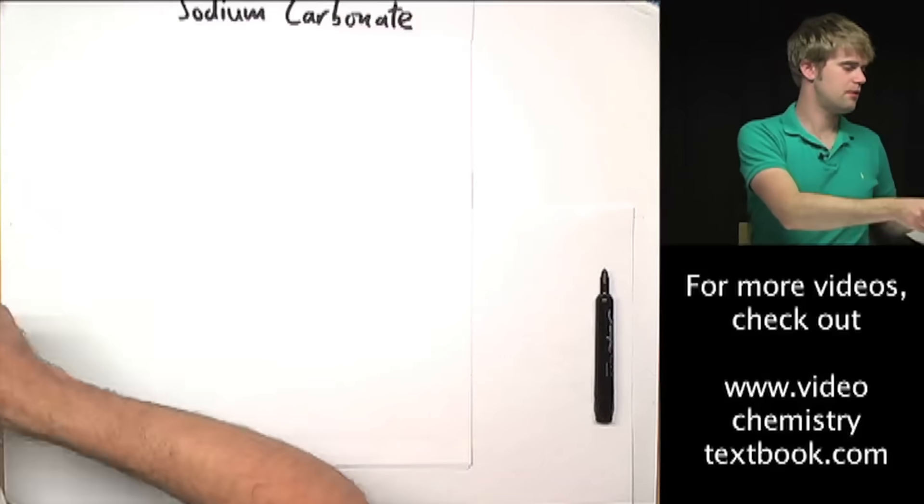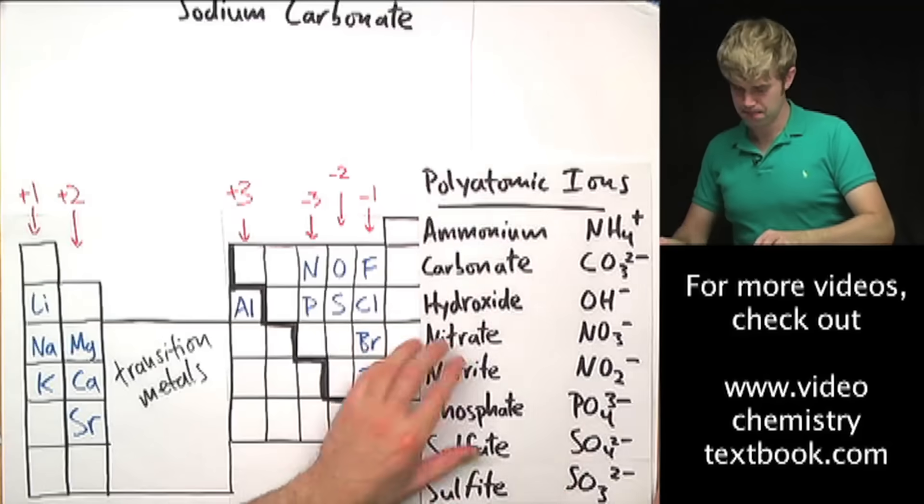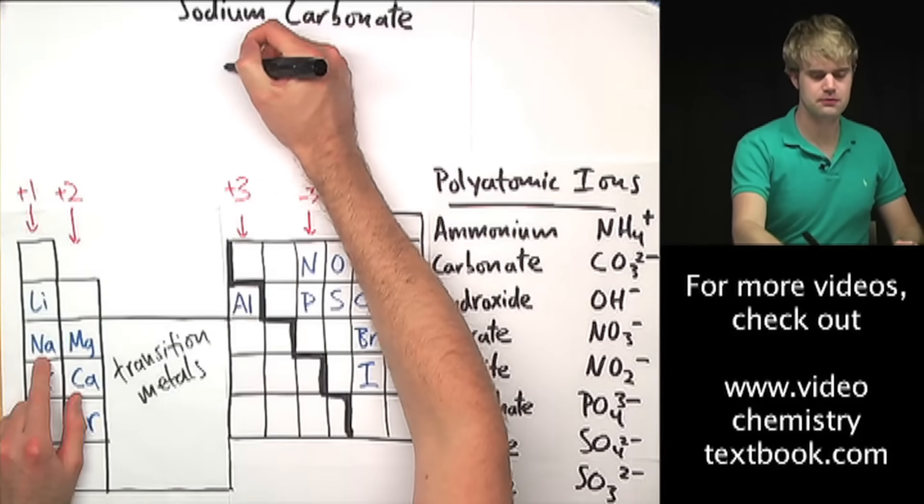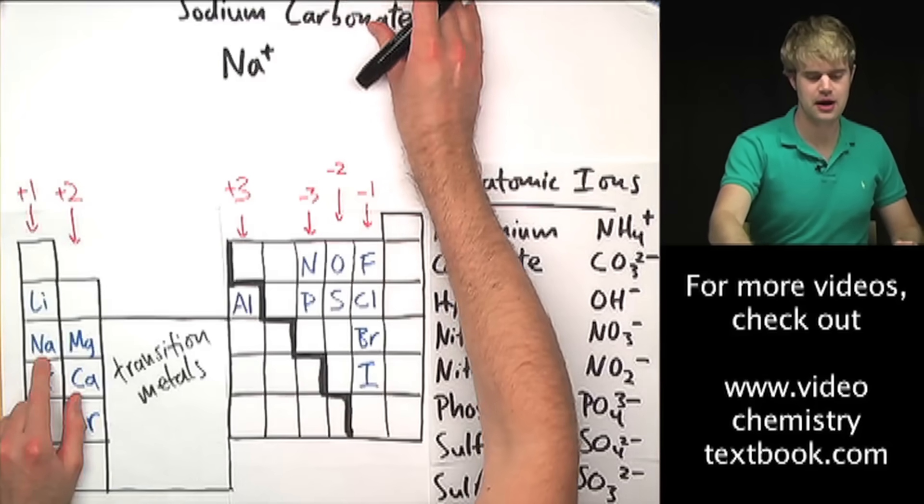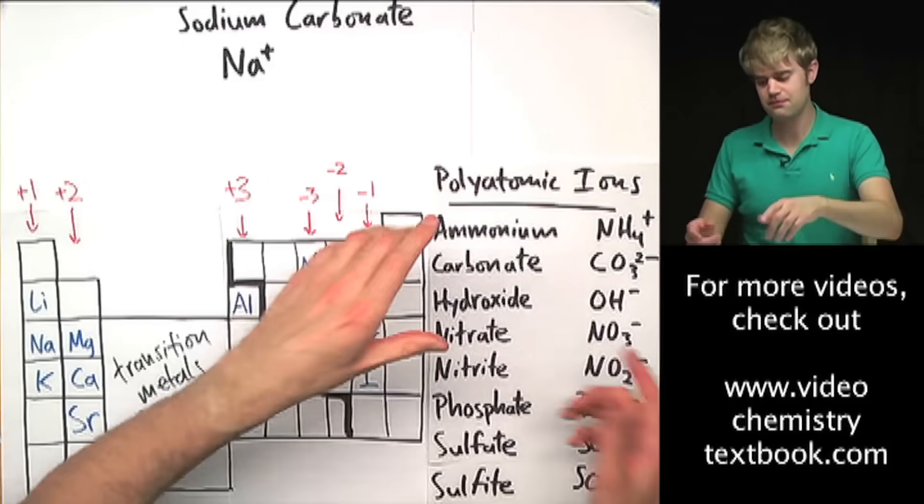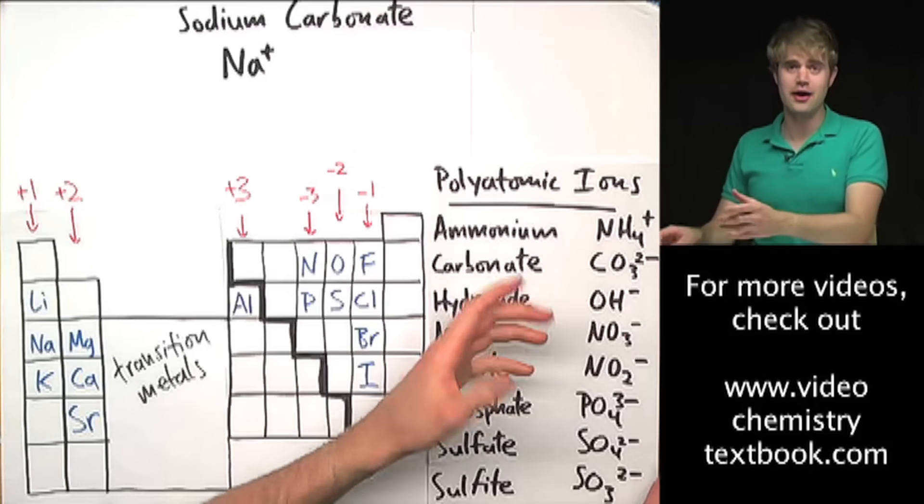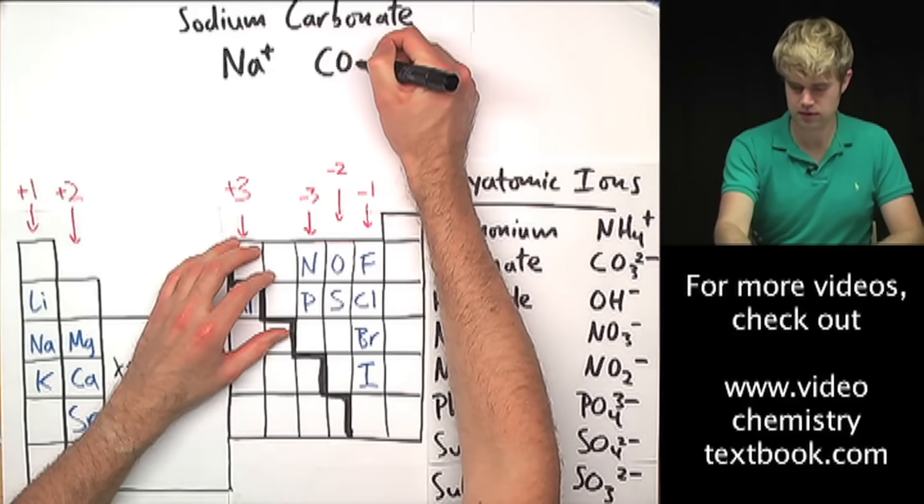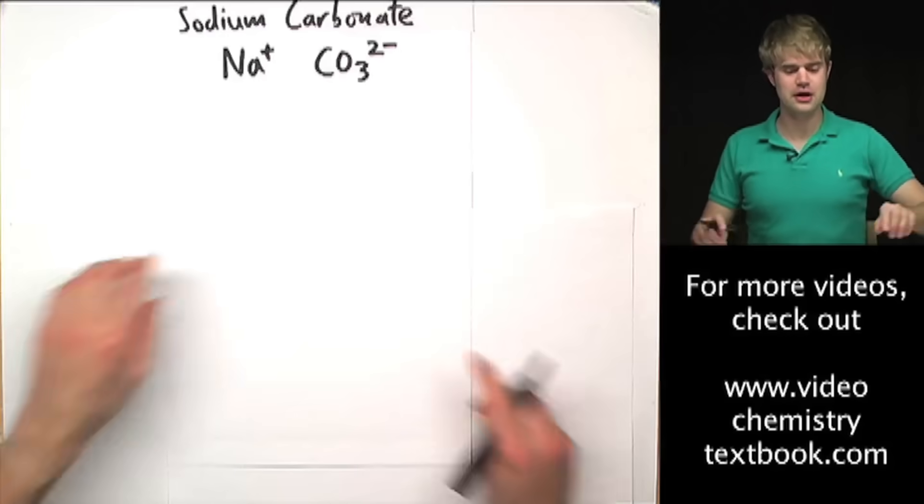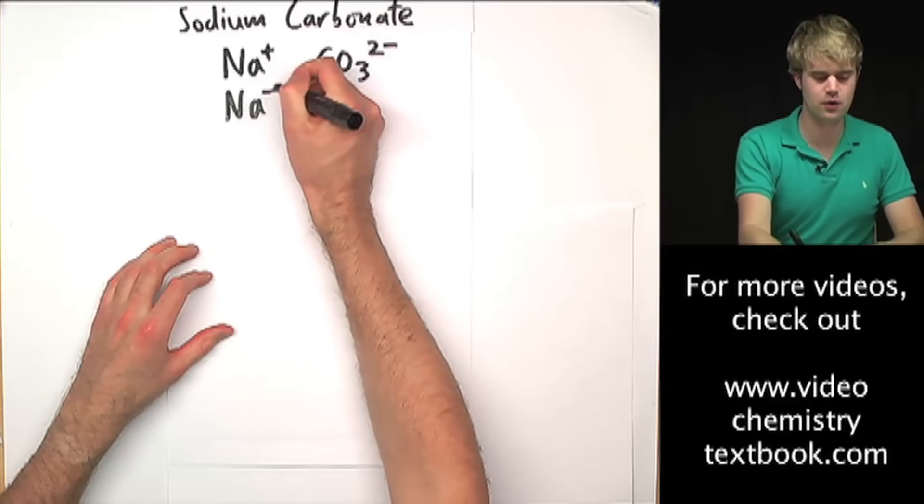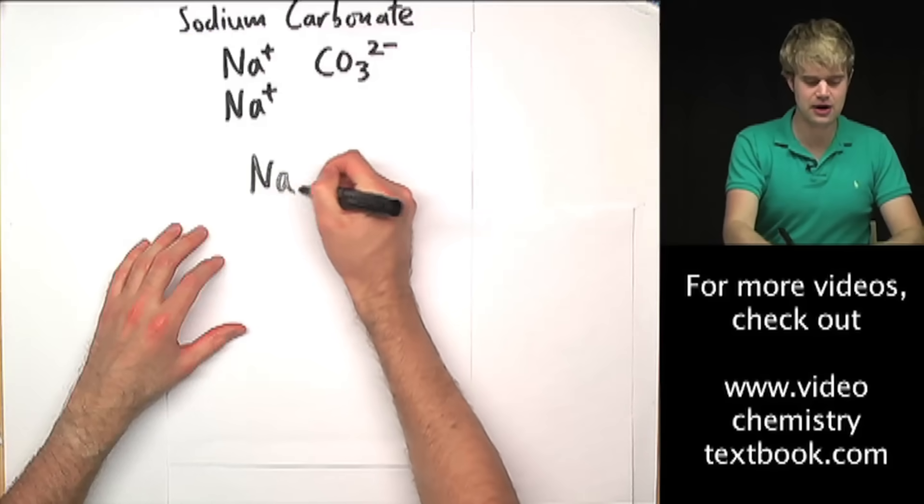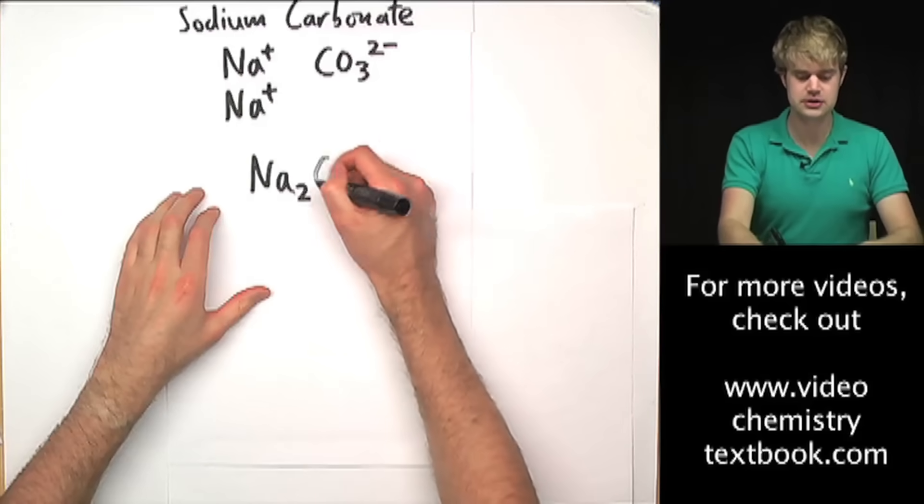Sodium carbonate. Back to the periodic table and the list. Sodium is in my 1+ column, so I write Na 1+. Carbonate is a polyatomic ion. Don't waste time trying to find carbonate on the periodic table. Just memorize this list and you'll know right away it's polyatomic. Carbonate is CO3, and this whole chunk of atoms has a charge of 2-. Now I balance the charges: 1+ versus 2-, so I add another sodium. Now I write the chemical formula as Na2 to show I have two of them, CO3.